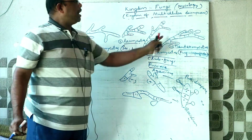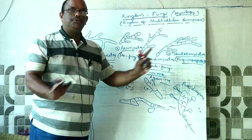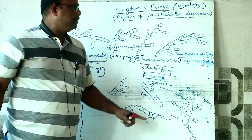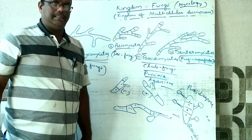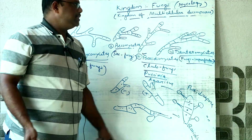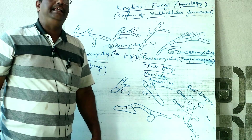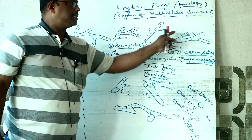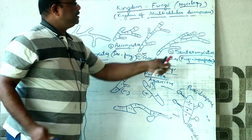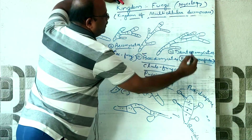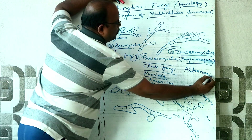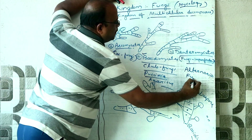The Deuteromycetes class consists of imperfect fungi. They are usually parasites and reproduce only asexually by means of conidia — they have no sexual stage at all. Common examples include Alternaria and Fusarium.